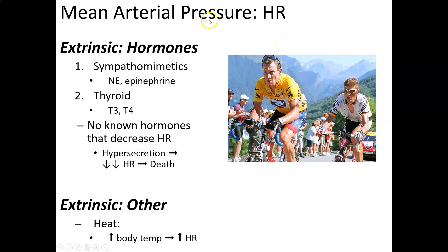To summarize heart rate: the only known hormones are the sympathomimetics — primarily epinephrine and norepinephrine — and thyroid hormones T3 and T4, all of which increase heart rate with increased release. One other extrinsic factor is heat: independent of everything else, if we increase body temperature, we increase heart rate.